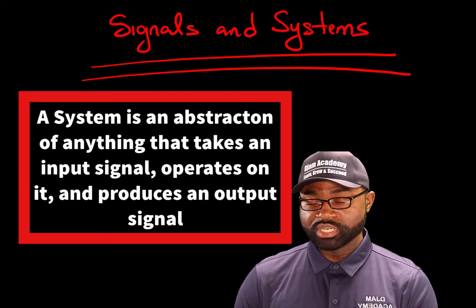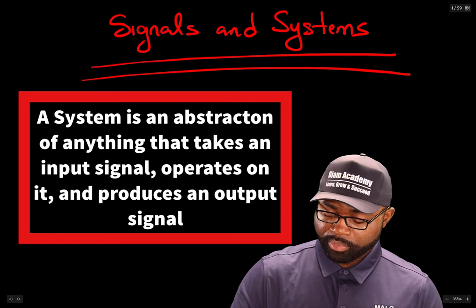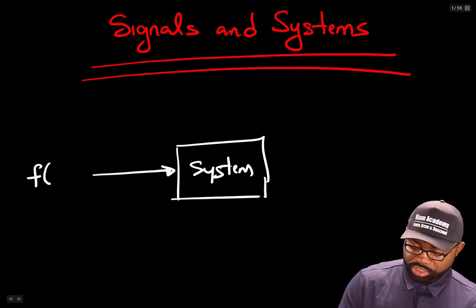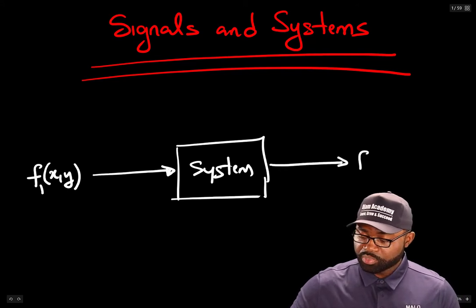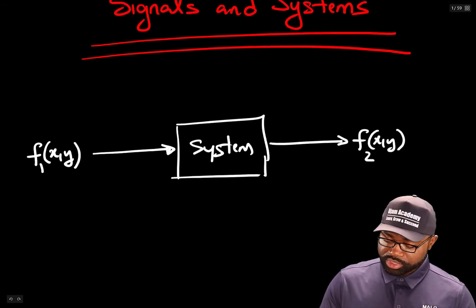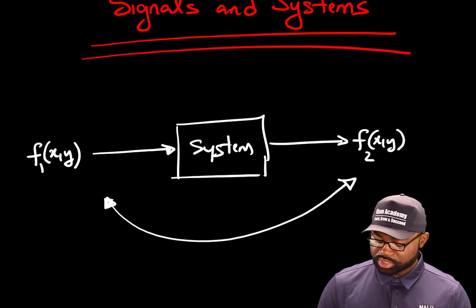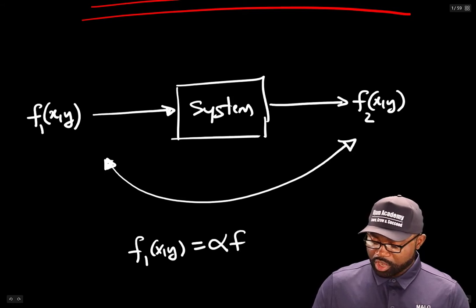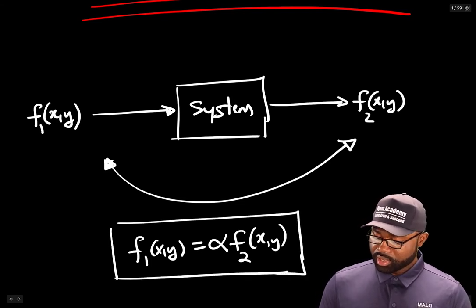But the question remains, what really is a signal? We have a system — it takes in an input signal, which is a function of one or two variables, and gives out an output signal, which may also be a function of one or two variables. In other words, a system establishes a relationship between an input signal and an output signal, related by a simple expression.